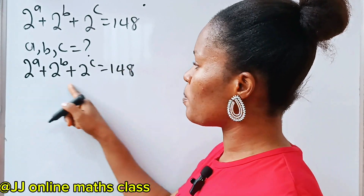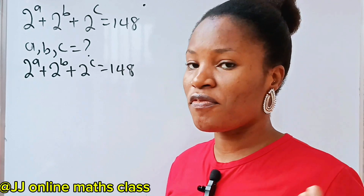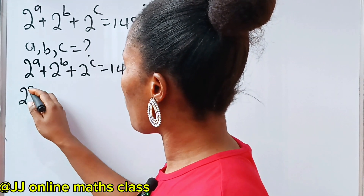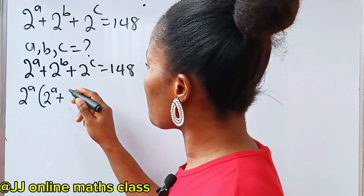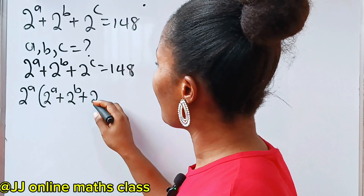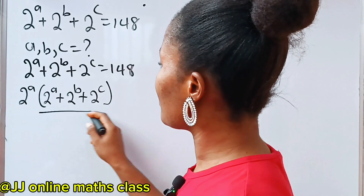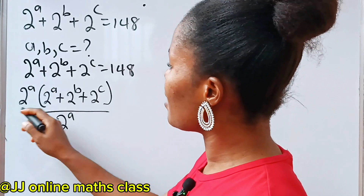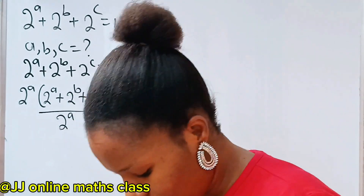Now, let's multiply and divide the left-hand side of this equation by 2 to the power of A. So if we do that, we are going to have 2 to the power of A multiplied by 2 to the power of B, 2 to the power of C, divided by 2 to the power of A. We cancel this and we still have this back. It's equal to 148.